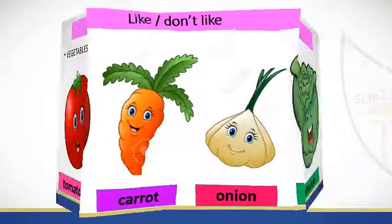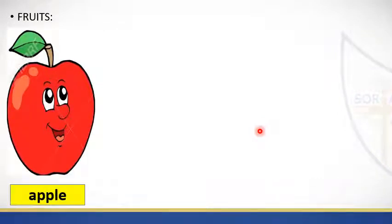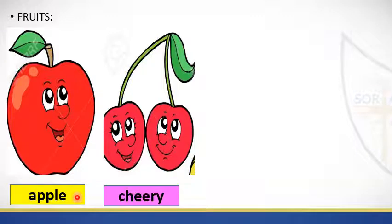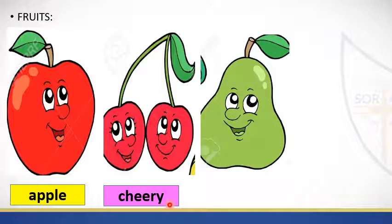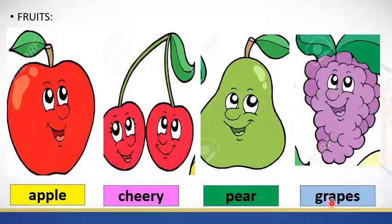Let's continue with the fruits. Look, please. Fruits. We're gonna continue with the fruits. What fruit is this one? This is an apple. Look at the second. What is this one? This is a cherry. Let's continue. What is this one? This is a grapes. One more time: this is an apple, this is a cherry, this one is a pear, and this is a grapes.